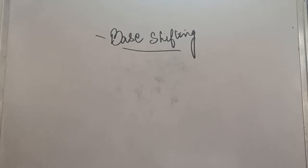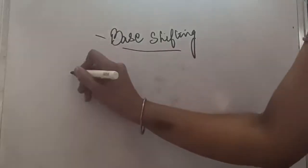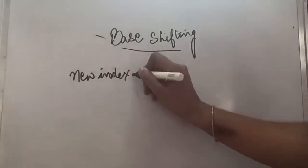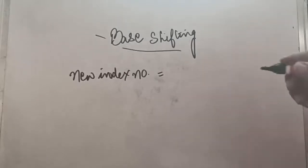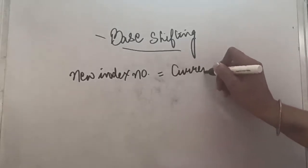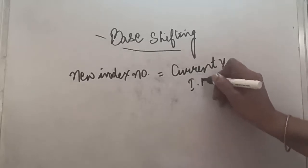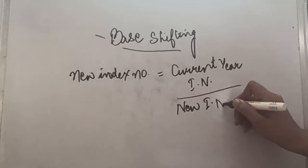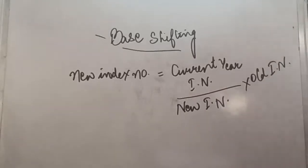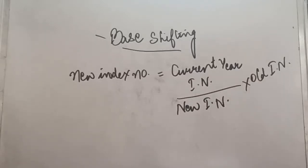Now let us look at an example and the formula used for shifting the base. The formula for calculating the new index number is: New Index Number = (Current Year Index Number / New Base Year Index Number) × Old Index Number. We take the current year index number, divide it by the new index number of the year to which we are shifting the base, and multiply by the old index number.